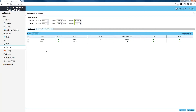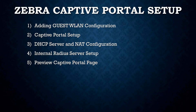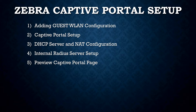Now you can see we've added a second WLAN, which is our guest access. For our next step we're going to be setting up our services to support the captive portal. We're going to be setting up the DHCP server and the NAT configuration, and also setting up the internal RADIUS server. We'll then conclude by showing you a preview of what the captive portal page will look like.